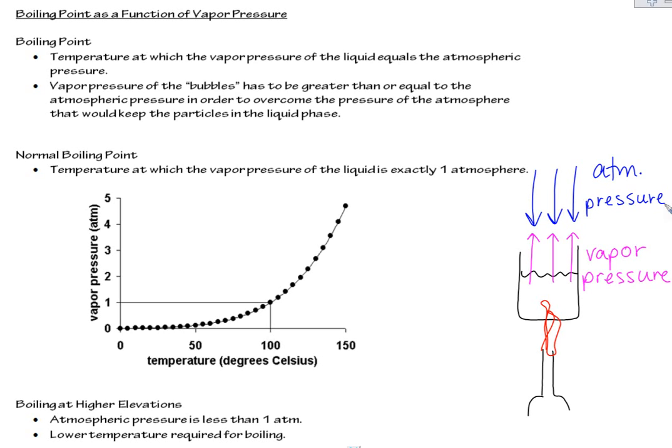Now, we can also define what's called a normal boiling point. And that would be the temperature at which the vapor pressure of the liquid is exactly one atmosphere. This one atmosphere is considered like standard pressure, and you'll hear that more when we get into the gas laws.